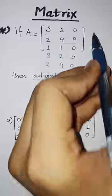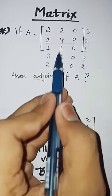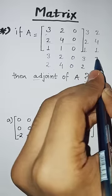you will note that the first column is 3, 2, 1, 3, 2. Then what do you do? The second column is 2, 4, 1, 2, 4.